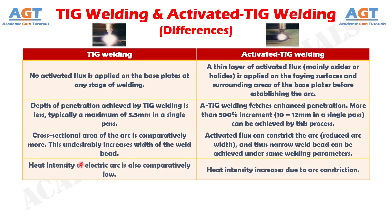Number 4: heat intensity of the electric arc is also comparatively low in TIG welding, whereas in activated TIG welding, heat intensity increases due to arc constriction.